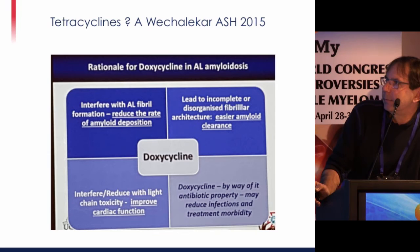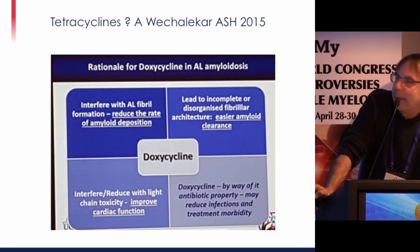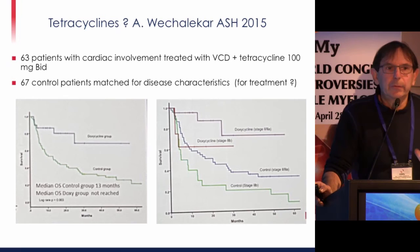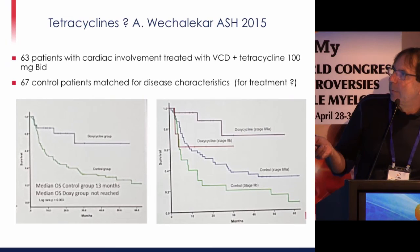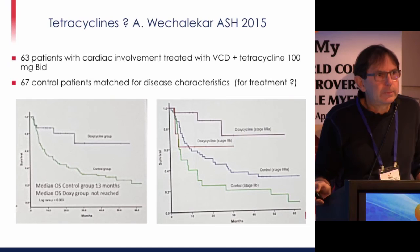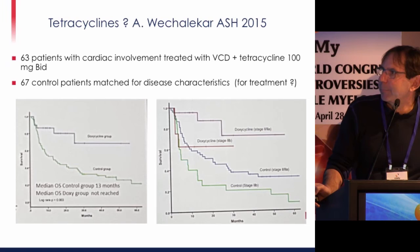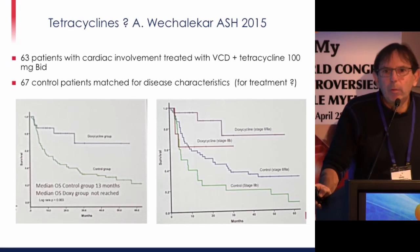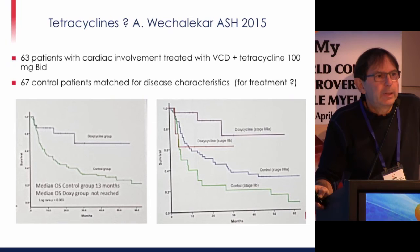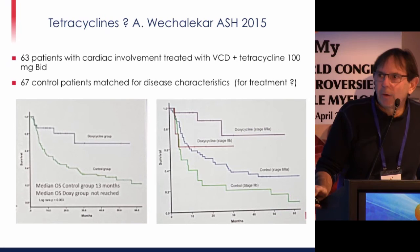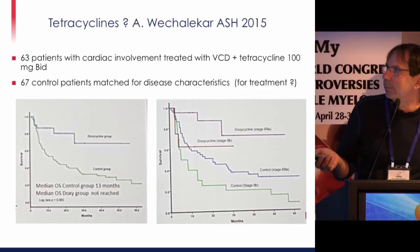Tetracyclines could do something for patients with cardiac disease: they can reduce the rate of amyloid deposition and reduce light chain toxicity. The London team at the last ASH meeting showed that patients treated with doxycycline and a bortezomib-containing regimen had a better outcome than 67 well-matched control patients. Doxycycline could be beneficial, and a randomized study in Europe is planned — and another in France with doxycycline and/or green tea in patients with cardiac AL amyloidosis.